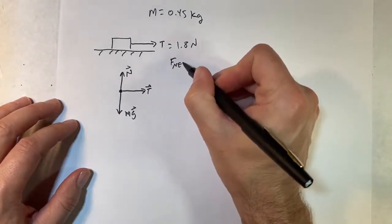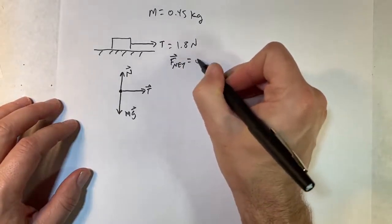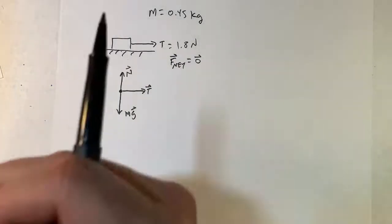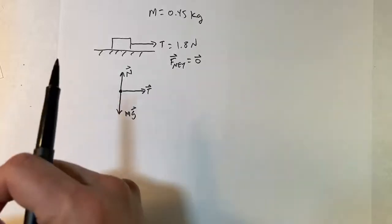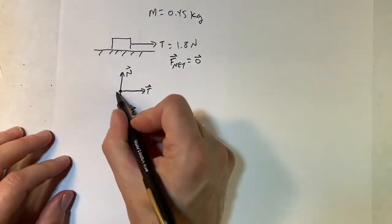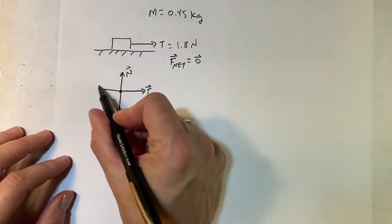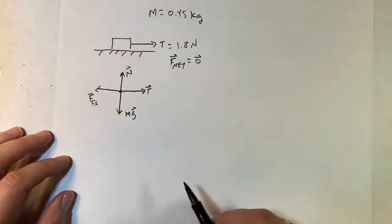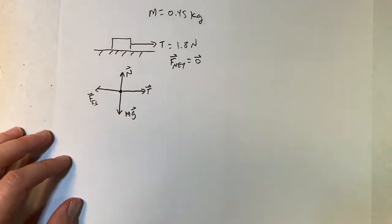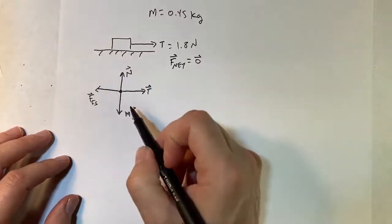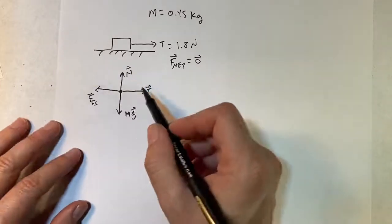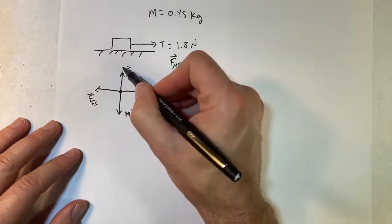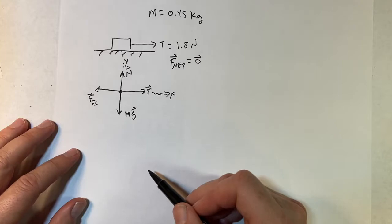I know that the net force is zero because it's stationary — it's at that magical breaking point right when it starts to move. So there has to be a force pushing back the other way, and that would be the static frictional force. The next step is to pick my x and y axes. In this case it makes sense to pick the horizontal as x and the vertical as y.